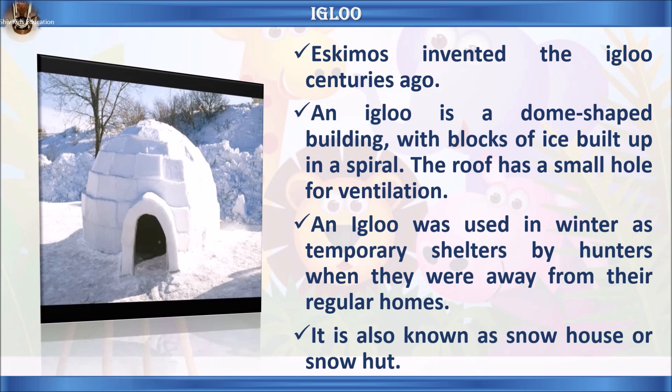Let's learn facts about the igloo. Eskimos invented the igloo centuries ago. An igloo is a dome-shaped building with blocks of ice built up in a spiral. The roof has a small hole for ventilation. An igloo was used in winter as a temporary shelter by hunters when they were away from their regular homes. It is also known as a snow house or snow hut.